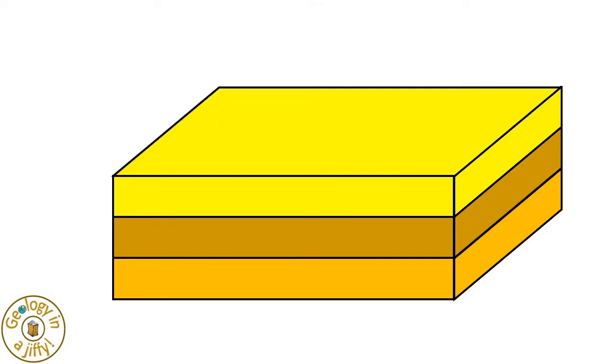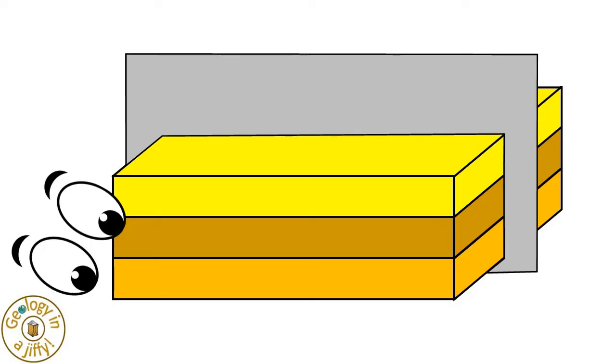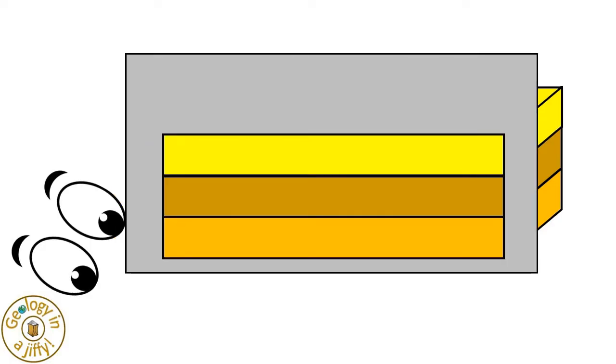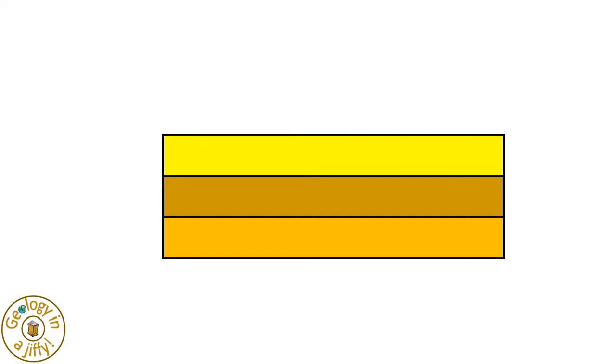If we take our block of rock and look at it in cross sections from the side, we will see this half block. The vertical section looking like this, with parallel layers.